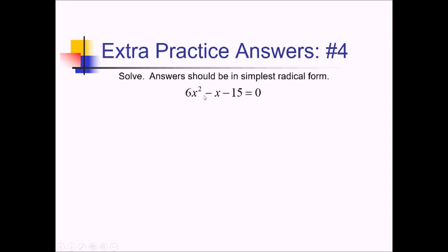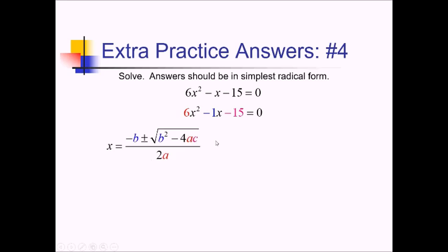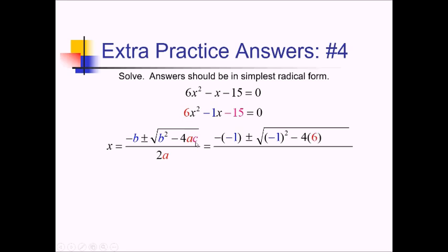For this problem, since I have a linear term in this quadratic equation, I will need to use the quadratic formula. I'm going to rewrite this with a 1 in front and color code everything, just so I know what that b value is. Writing out the quadratic formula: negative b plus or minus square root of b squared minus 4ac, all over 2a. Plugging things in, we've got negative negative 1 — the b value here is negative 1 — plus or minus square root of negative 1 squared, minus 4 times the a value 6, times the c value negative 15, all over 2 times 6.